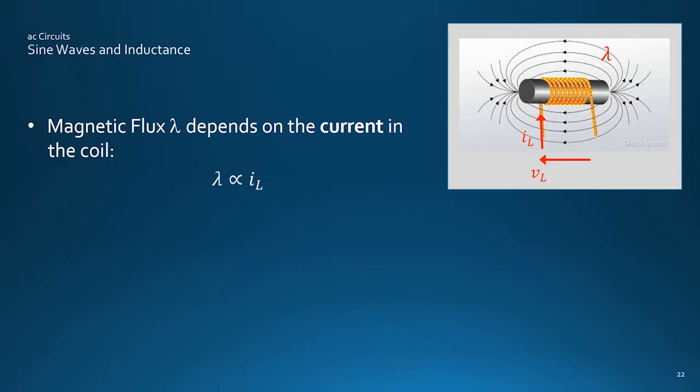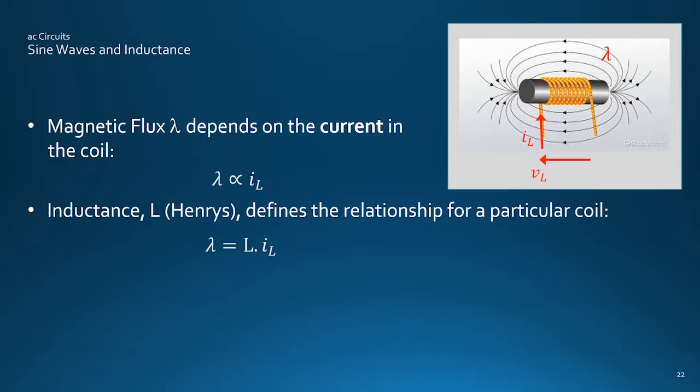The other simple passive component is inductance. An electric current in a wire generates the magnetic field lambda here, which can be concentrated by winding a coil. The inductance, L, measured in Henry's of a particular coil, is defined as the ratio of magnetic flux to the current producing it.